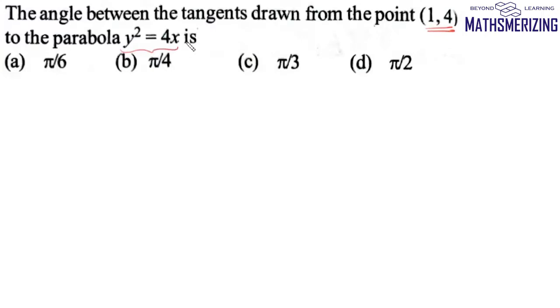So we need to find angle between the tangents. For this first form equation of tangent is given by y equals mx plus a by m. Now a in this case is 1 so we can write it as y equals mx plus 1 by m.